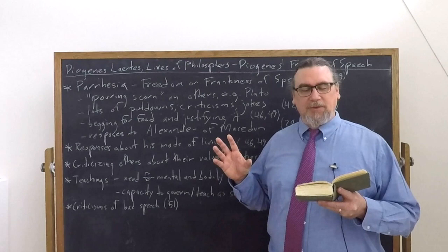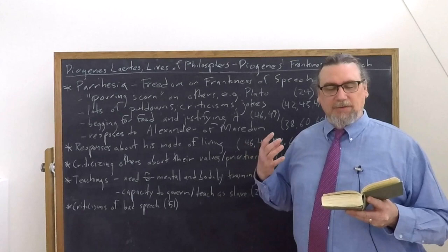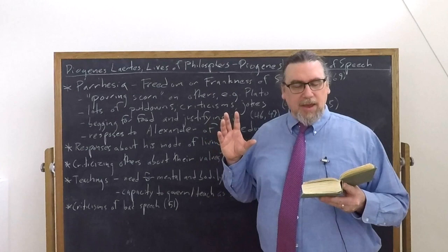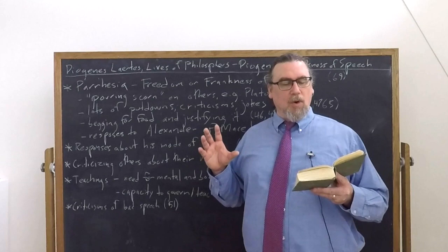And the demagogues, the mobs, lackeys. He used to also say when he saw physicians, philosophers and pilots at their work. Now, philosophers in the genuine sense for him, he deemed man the most intelligent of all animals. When he saw interpreters of dreams and diviners and those who attended to them or those who are puffed up with the conceit of wealth, he thought no animal more silly. He would continually say for the conduct of life, we need right reason or a halter. So he's an equal opportunity offender, as we typically say.